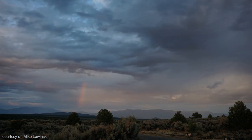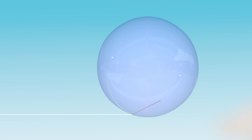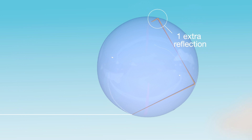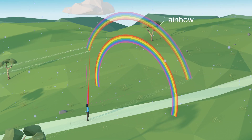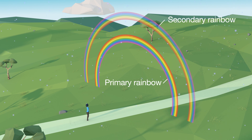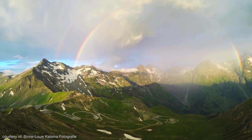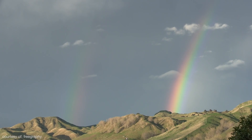Now if you're really lucky, you might get to see a secondary or double rainbow. These form when light travels through the bottom of the raindrop and reflects off the inside of the raindrop one more time than we find with primary rainbows. This means that secondary rainbows appear outside of primary rainbows, have the reverse order of colours, and are less bright due to the light lost in the extra reflection.